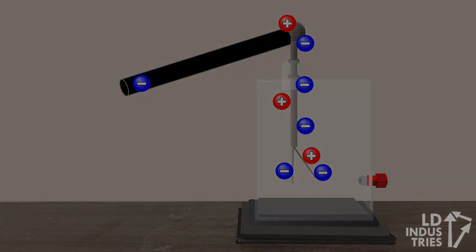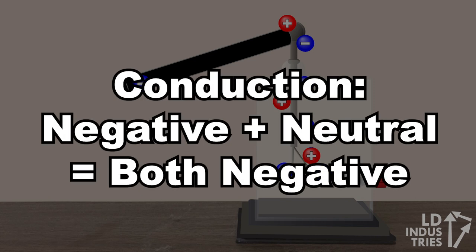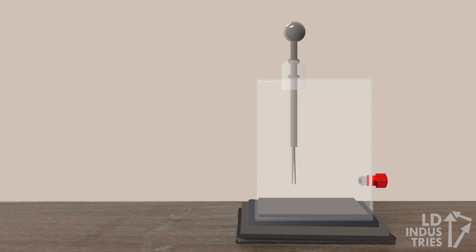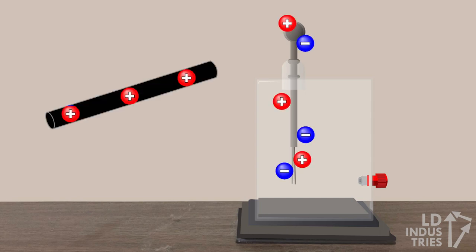Note how in conduction, a negative rod causes the neutral electroscope to also become negatively charged. What if we try the same thing but with a positive rod? In this case,